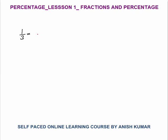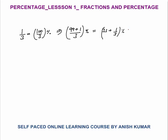One by 3 equals 100 by 3 percent. Since 100 is not divisible by 3, write it as 99 plus 1 by 3, giving 33 plus 1 by 3 percent. This can be written as a mixed fraction: 33 and 1/3 percent, or equivalently 33.33 percent. Both are the same.